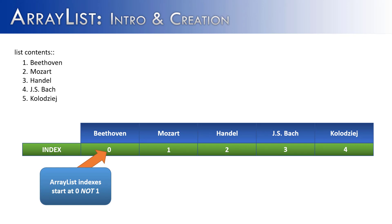Notice that the index would start at 0, not at 1. So the list, more properly, would look like Beethoven 0, Kloji 4.